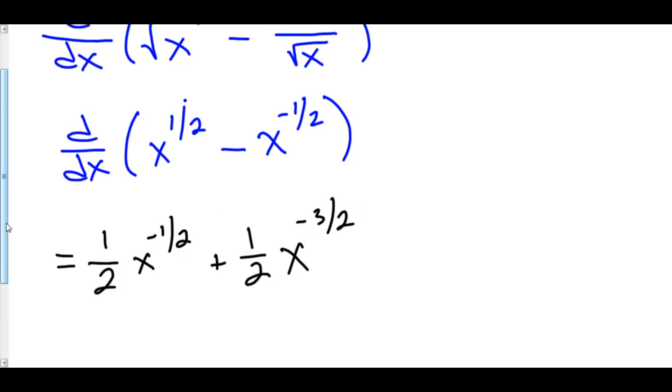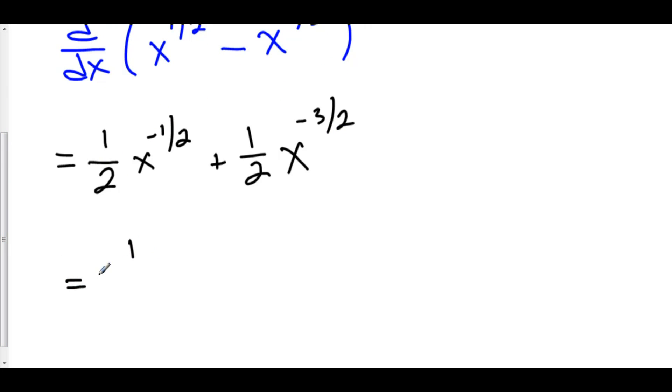We can now rewrite this as 1 over 2 times the square root of x, because x to the negative 1 half moves down to become a positive exponent, and the 1 half power is just a square root. Plus 1 over 2x to the 3 halves. x to the 3 halves is just the square root of x cubed, but we can keep it as x to the 3 halves. It's much nicer. Here is the answer.